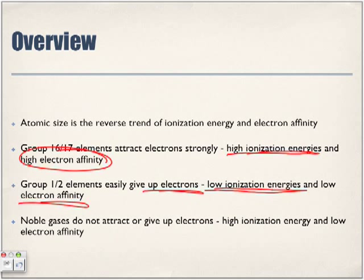Noble gases do not attract or give up electrons. High ionization energy. They are less likely to become ions. And they have low electron affinity. They really don't care to gain any electrons. They already have, they've already fulfilled the stable octet, the noble gases in group 18.